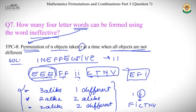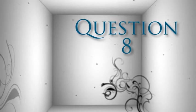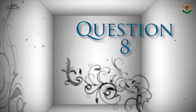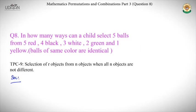The total number of four-letter words is obtained by adding all the cases together. This is how we solve problems where we have to permute n objects taken r at a time when all of them are not different.